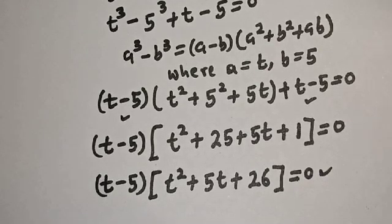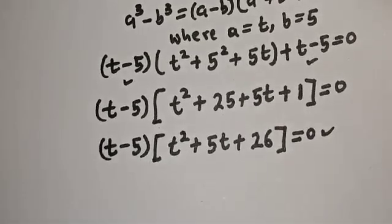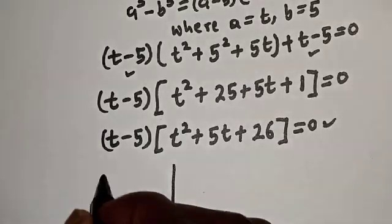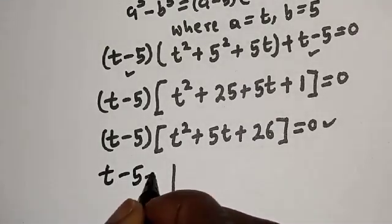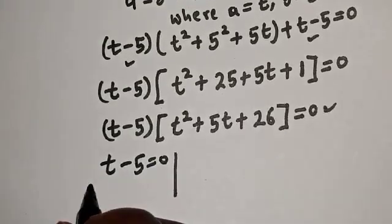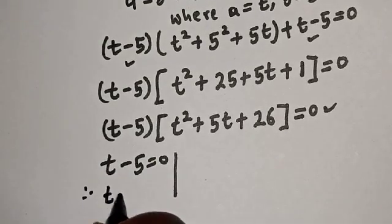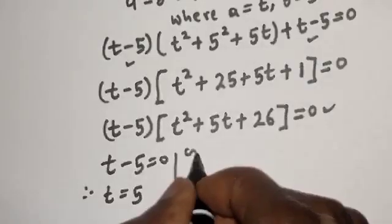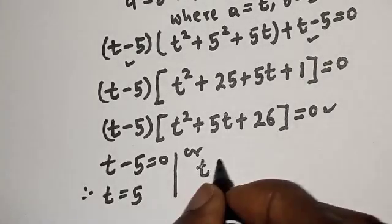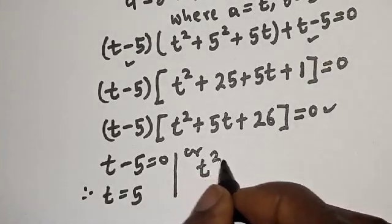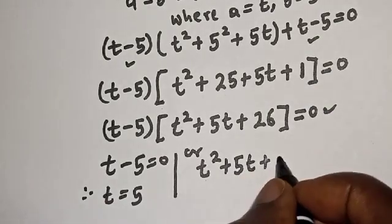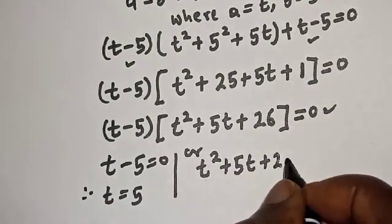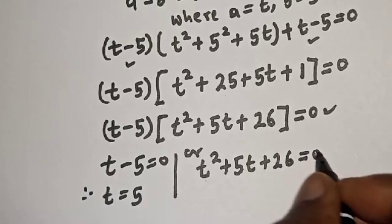There are two cases here. The first case is t minus 5 equals zero, therefore t equals 5. The second case is t squared plus 5t plus 26 equals zero.